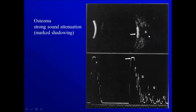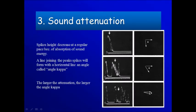We call it shadowing — sound waves cannot reach this area, so we get no information back from it. In the A-scan, you can see the lesion has very high reflectivity followed by marked attenuation with very low spikes. There is an angle called angle kappa — the angle between the line joining the tops of the spikes and the horizontal line. Angle kappa is large in case of marked attenuation and small in case of minimal attenuation.